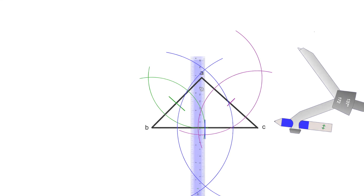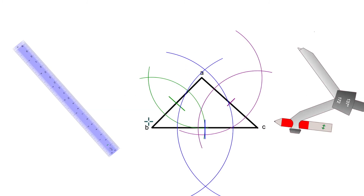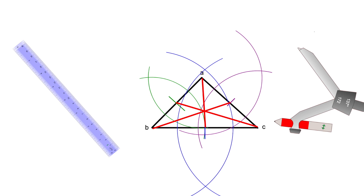Now that I have the three midpoints of each segment, I'm going to match them with the opposite vertex. Starting with segment AB — the midpoint's opposite vertex is point C — I grab my ruler and draw a line between that midpoint and point C. From segment AC, I grab the midpoint and draw a line to the opposite vertex B. And from segment BC, I draw a line from the midpoint to the opposite vertex A. This is how you find the three medians of a triangle, and the point where they all meet is called the centroid.